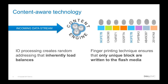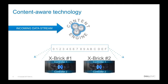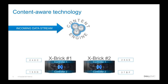We need an addressing scheme based on these fingerprints that will be uniform. If we take the first hexadecimal digit, there are 16 possibilities — 0 through F. Suppose we have a two X-brick cluster, so two X-bricks each with two controllers gives us four controllers total. We take that space of 0 to F and divide it into four equal parts, so each controller is responsible for fingerprints starting with four specific hexadecimal numbers.